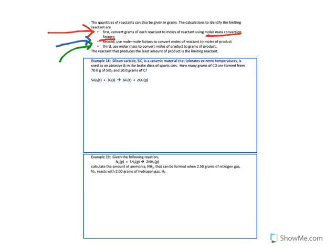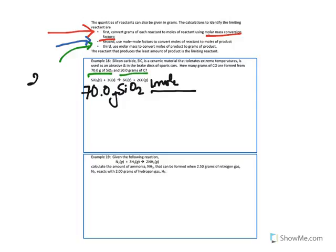Silicon carbide is a ceramic material that tolerates extreme temperatures, used as an abrasive and in the brake discs of sports cars. How many grams of carbon monoxide are formed if you start with 70 grams of silicon dioxide and 50 grams of solid carbon? We have to look at both reactants. Step 1: convert grams to moles using the molar mass conversion factor. One mole of SiO2 weighs how many grams? Silicon is 28.09, oxygen is 16 and there are two. Calculating, we get 60.09 grams per mole.